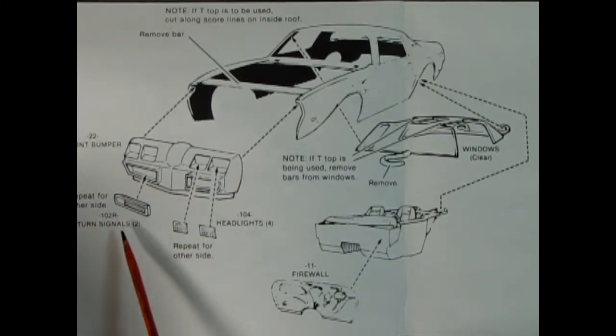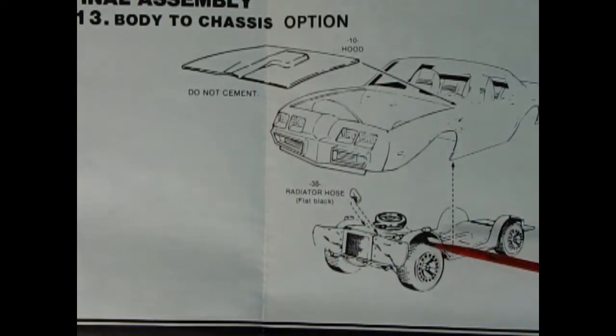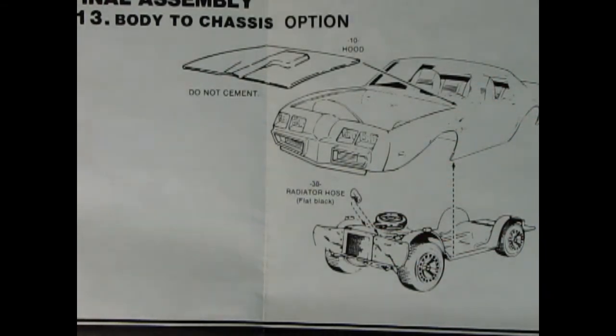Now panel 13 begins the final body assembly bits. So here we have our hood which should be sitting just on top there, then our body drops onto the chassis. Here's our radiator hose, and once it's all glued together you move on to step 14.